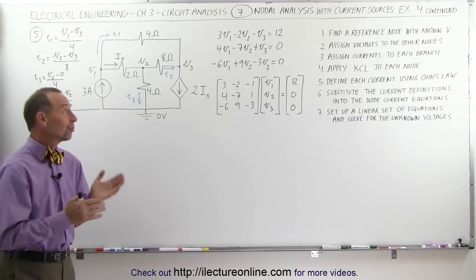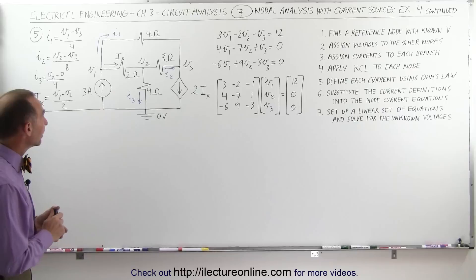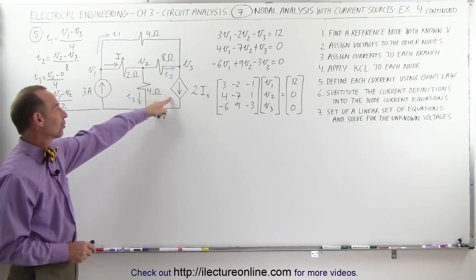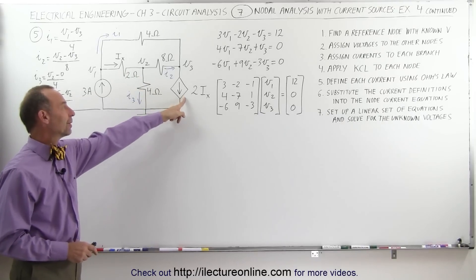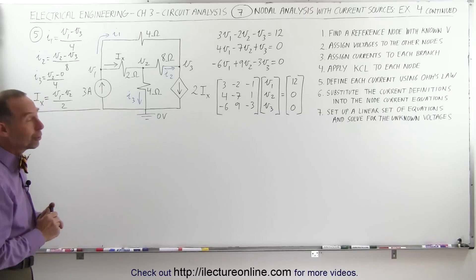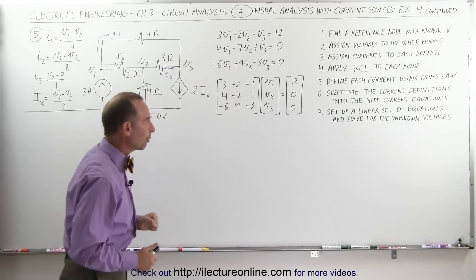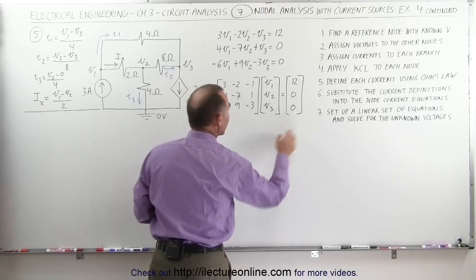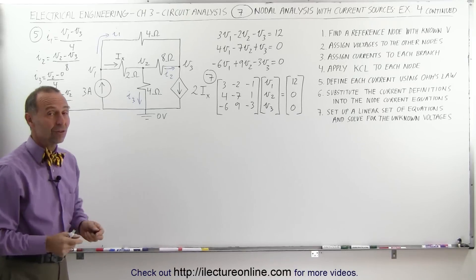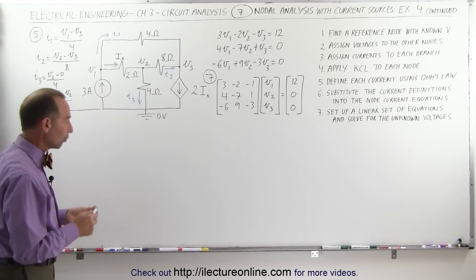Welcome to our lecture online. In the previous video we started on this problem where we had a circuit with three nodes for which we had to find the voltage. We had three currents plus the one defined as I sub x, which was also a source for the dependent current source equal to two times I sub x. After applying node analysis methodology, we came up with three equations for the three voltages in matrix format. Now we'll solve for V1, V2, and V3 using the determinant method, or Cramer's rule.